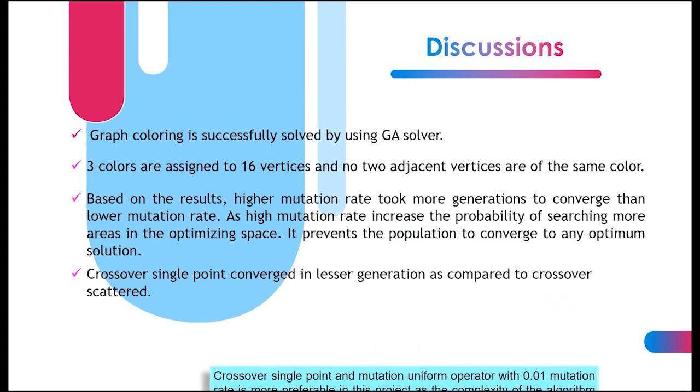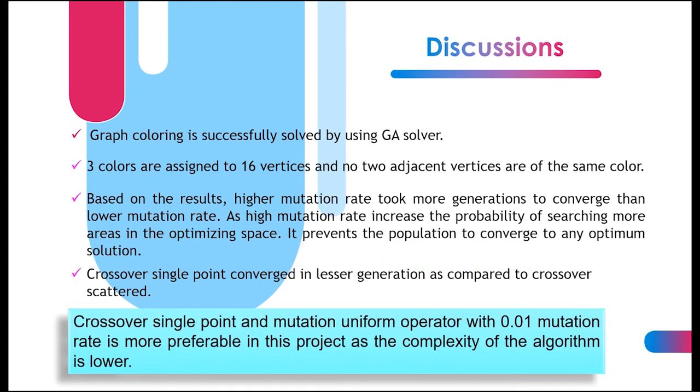In conclusion, crossover single point and mutation uniform operator with 0.01 mutation rate is more preferable in this project as the complexity of the algorithm is lower.